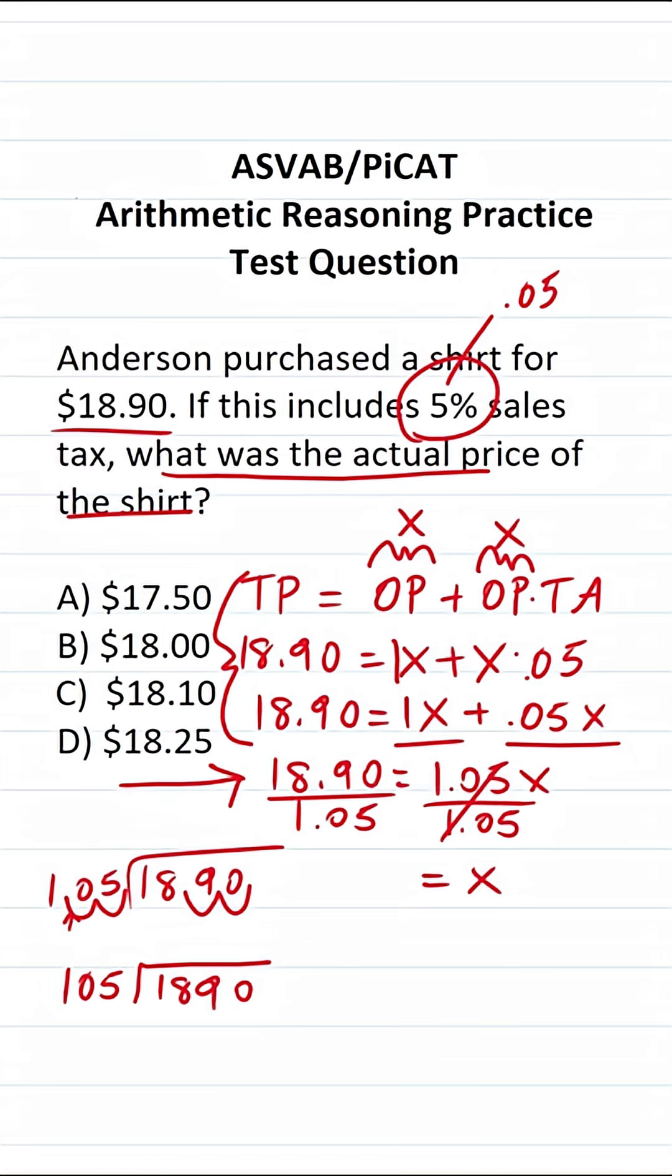Now we can do this long division. How many times does 105 go into 189 without going over? It's going to be one time. 105 times one is 105. Let's do this subtraction. Nine minus five is four. Eight minus nothing is eight. One minus one is nothing. Now we've got to drop down this zero.